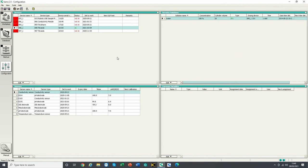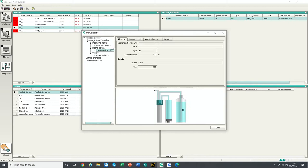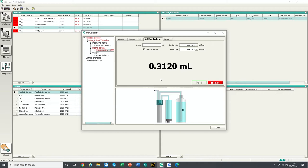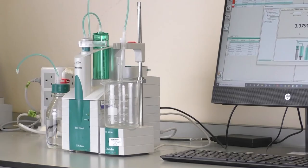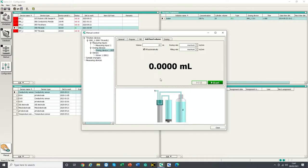In manual control, empty the cylinder unit and allow the cylinder to automatically refill. Expel any remaining reagent from the buret lines using the dosing command in manual control. Then dose the full cylinder volume.